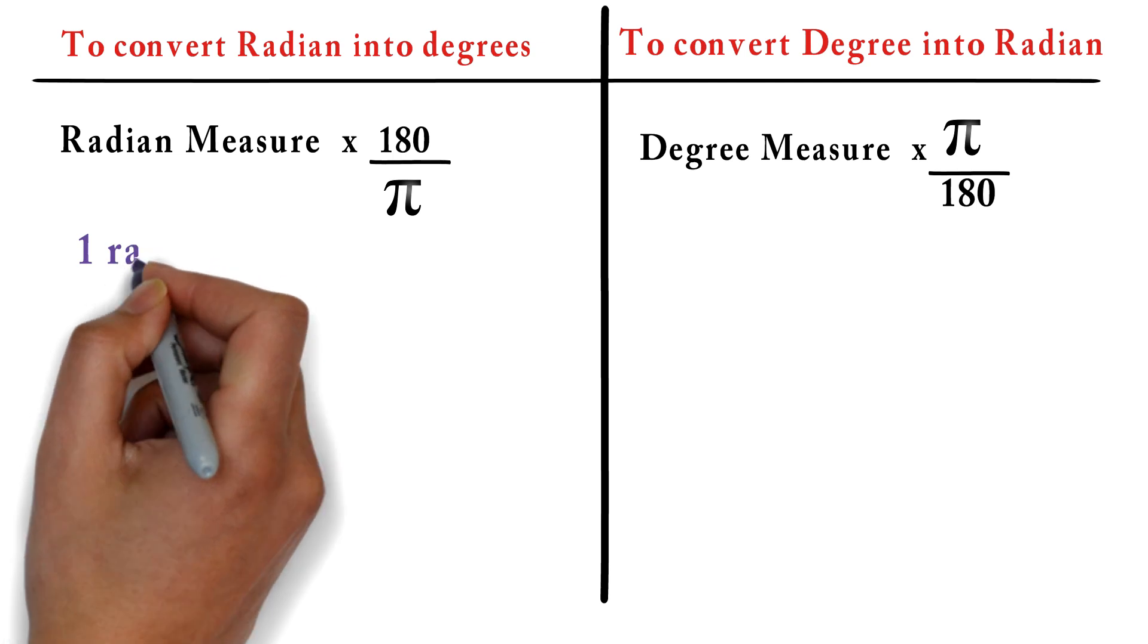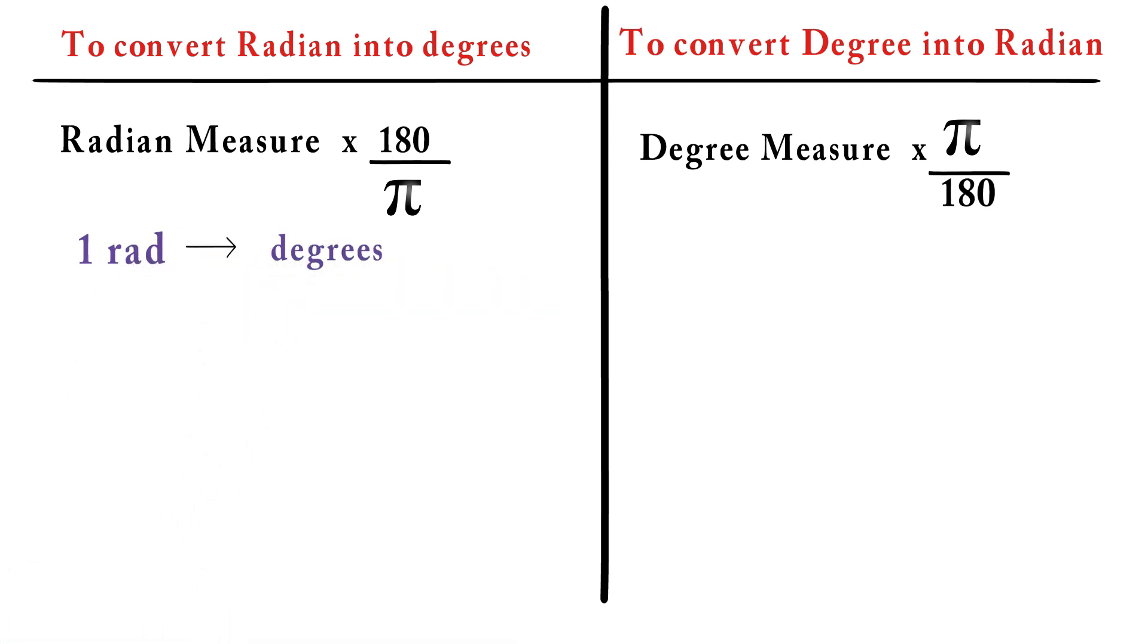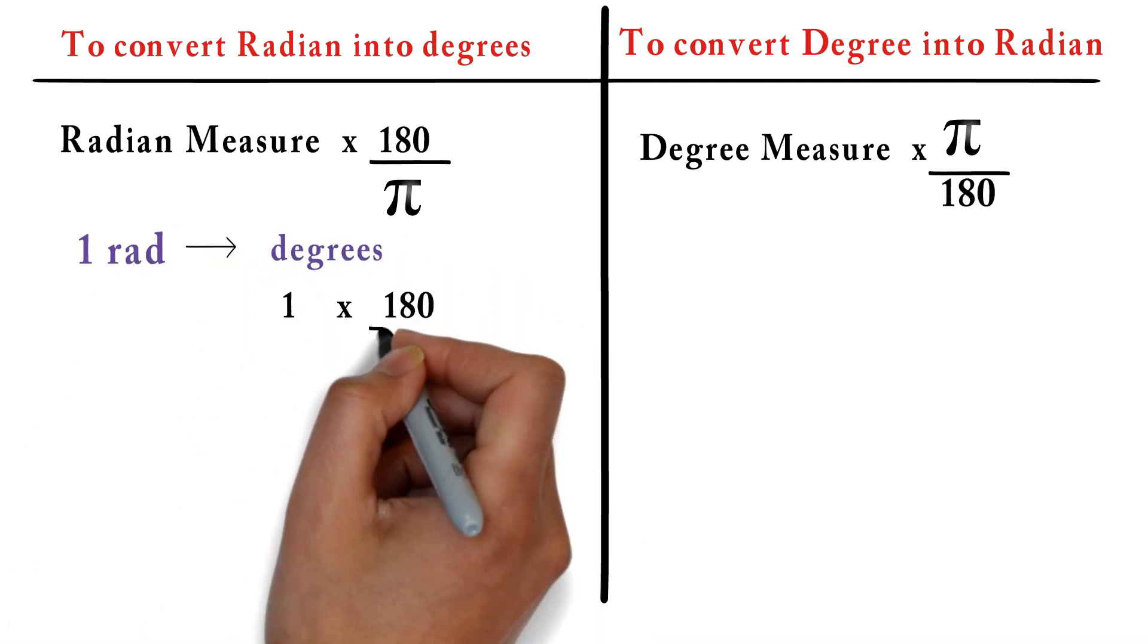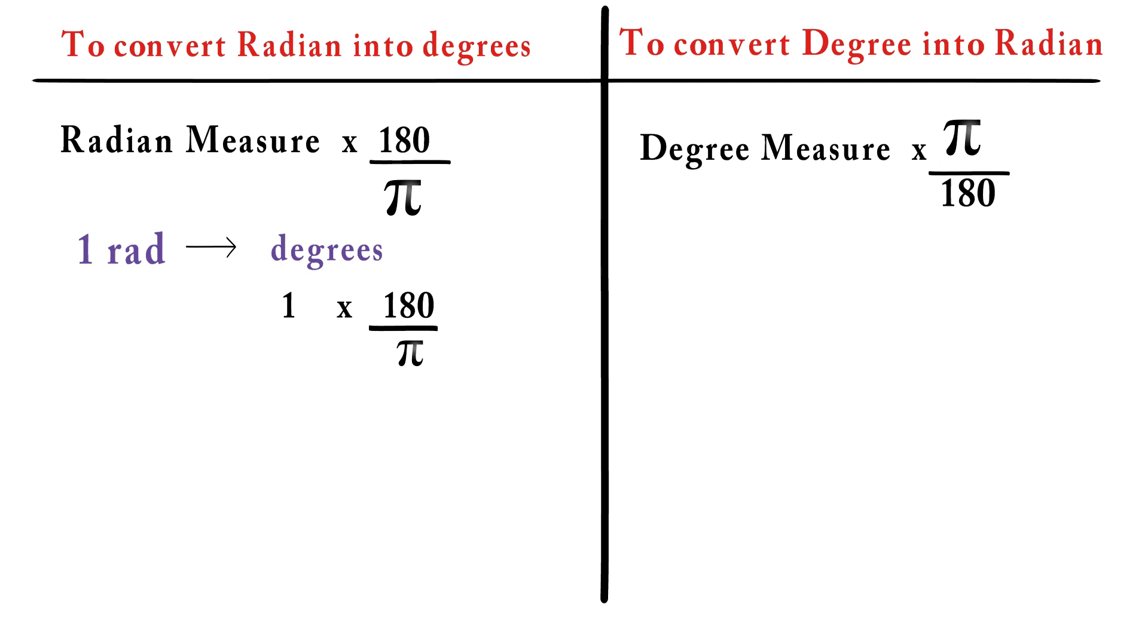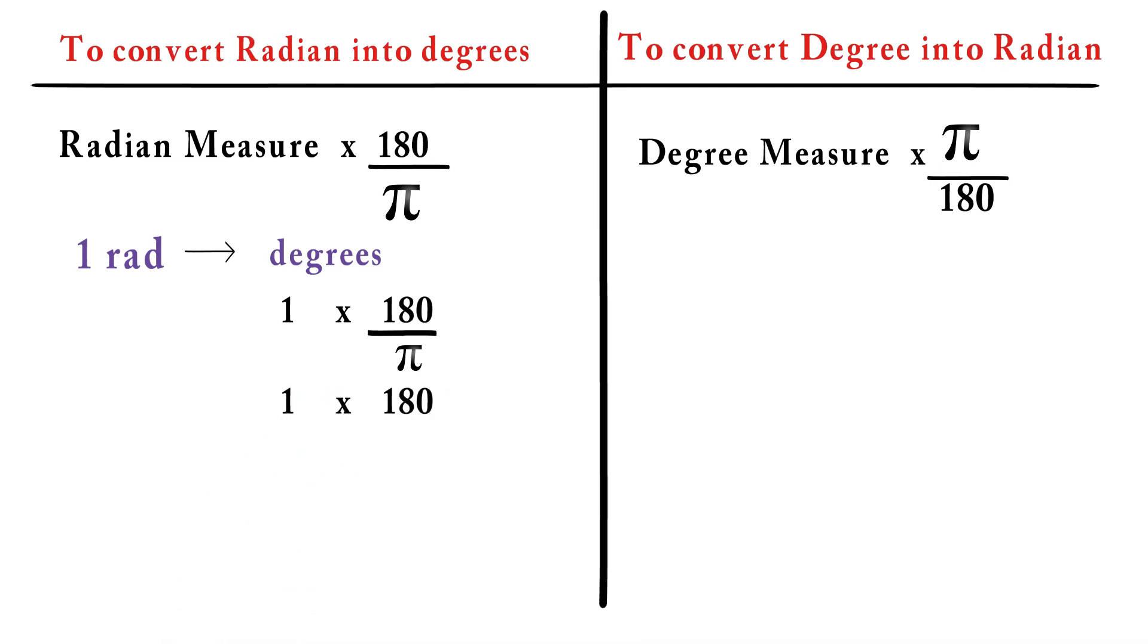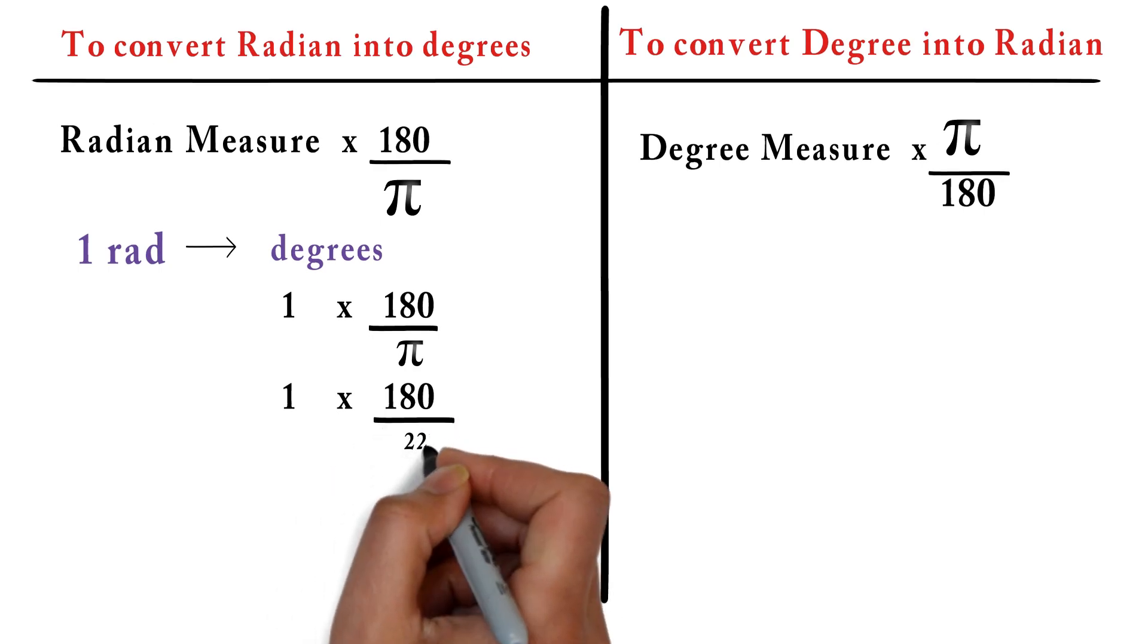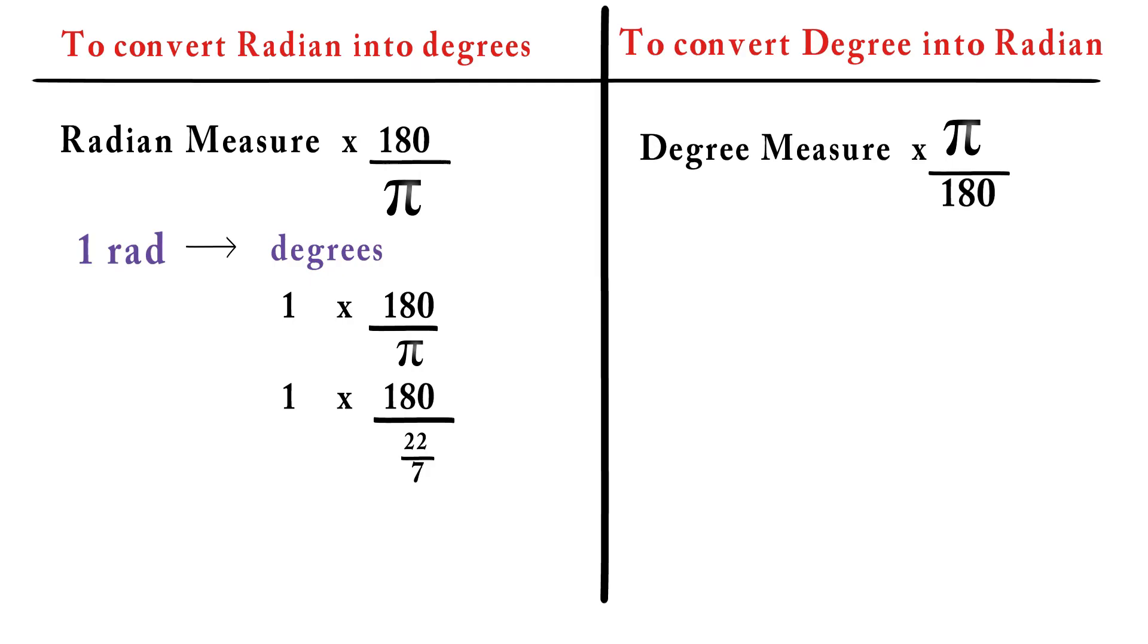Suppose if you want to convert one radian into degree, multiply one by 180/π. As you want one radian in degree measures, you need to replace π by 22/7. 180 times 7/22 is 57.2958 degrees approximately.